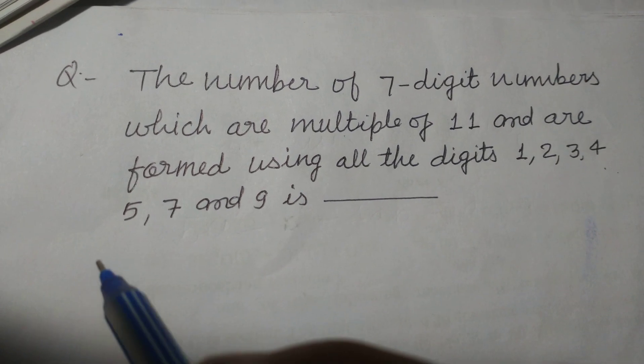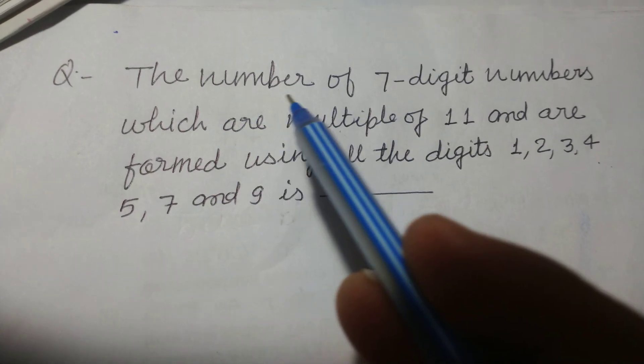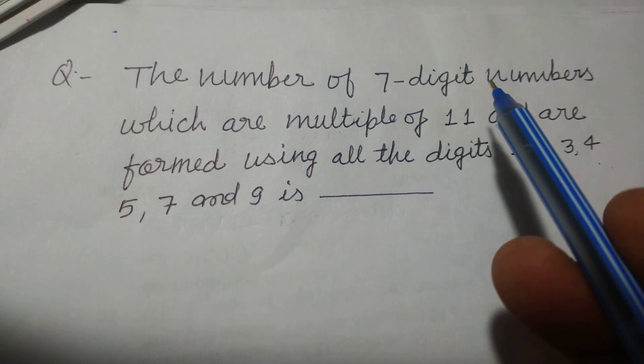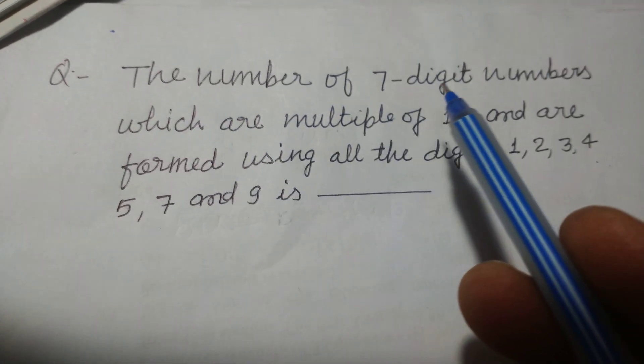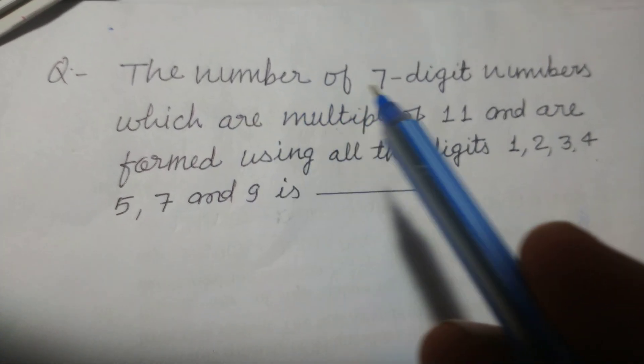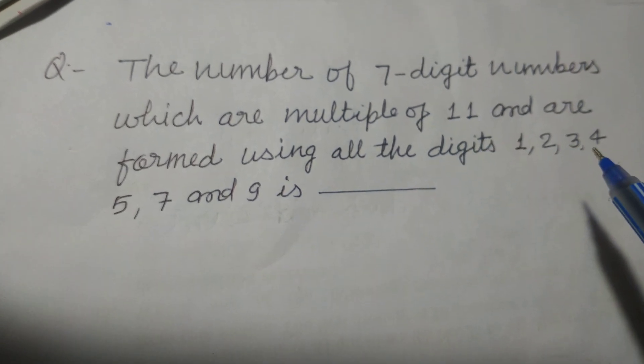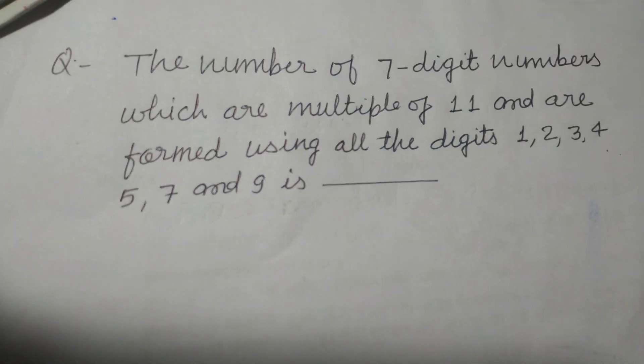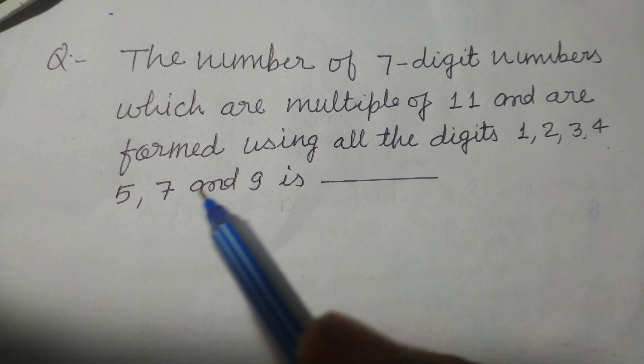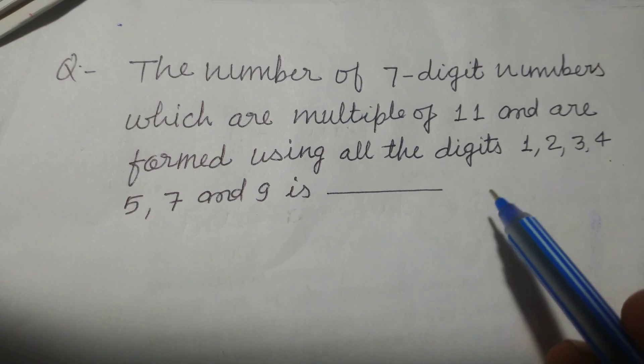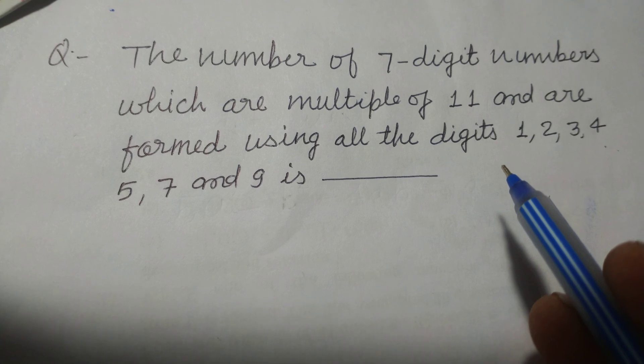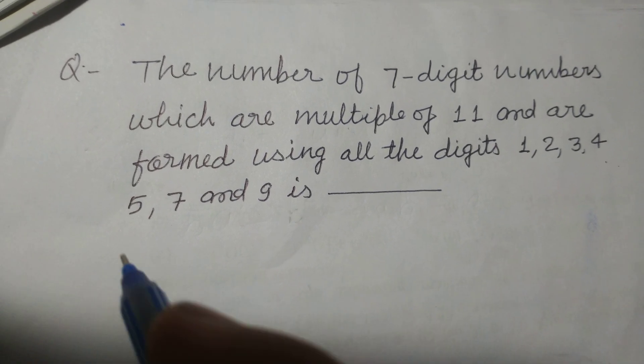Hello student and warm welcome to this YouTube channel. Here is a question from permutations and combinations. The number of 7-digit numbers which are multiples of 11 and are formed using all the digits 1, 2, 3, 4, 5, 7, and 9 is.